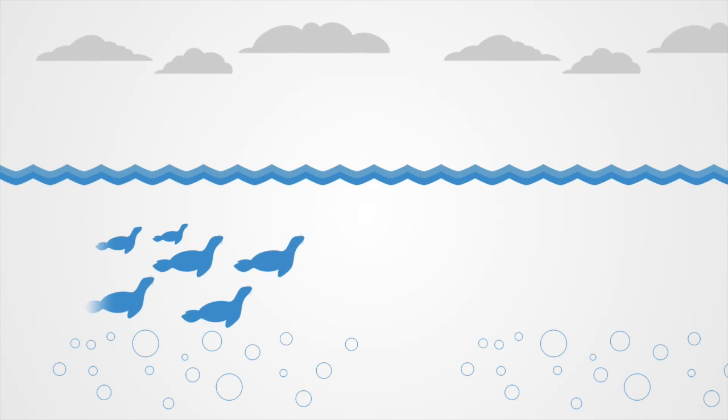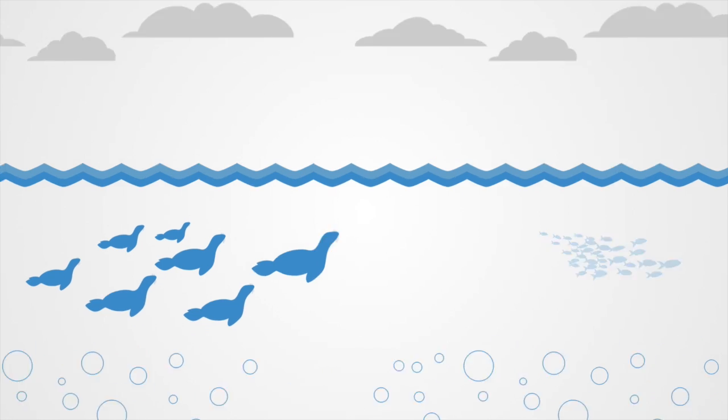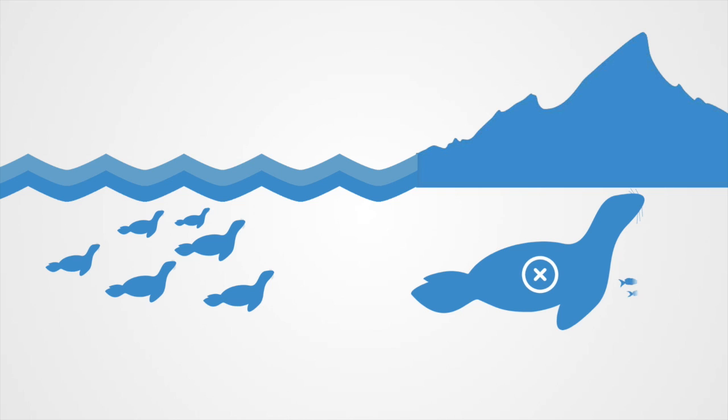As an example, we can think about a population of seals that goes out fishing every day. Hunting for fish is energy consuming, and thus some seals may adopt a strategy of simply stealing the fish of those who have gone out fishing.